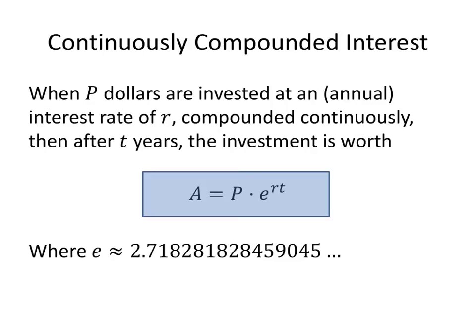And it turns out that the formula simplifies quite nicely in that case. So we don't always continuously compound interest, but when we do, the amount of money that we get is simply equal to P times e to the rt, where e is this weird number 2.71828 and so on.